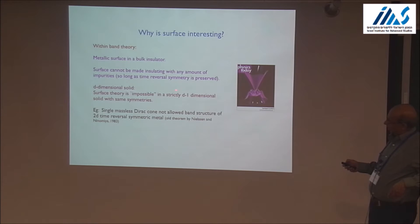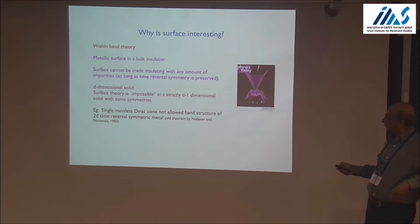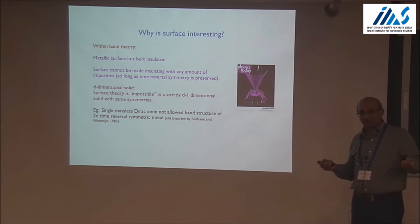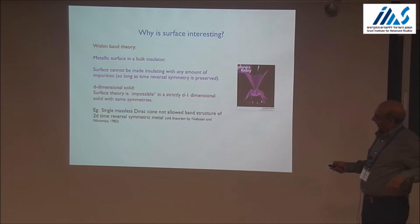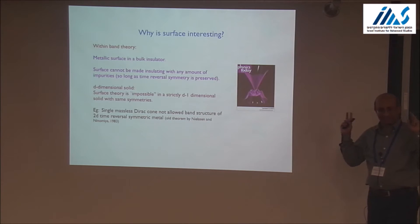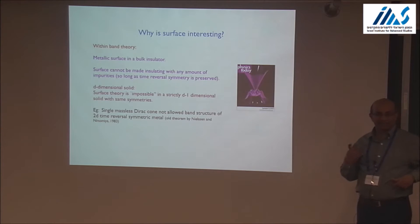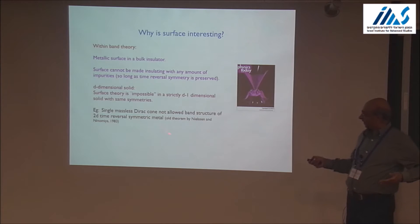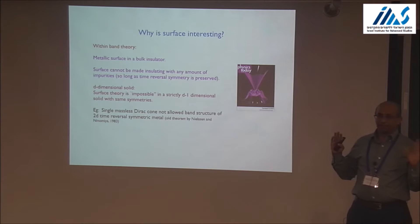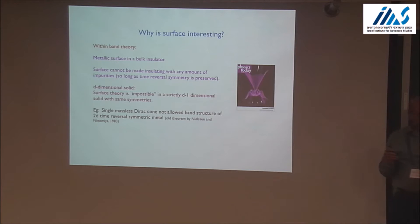More conceptually, if you have a d-dimensional solid in a topological insulating phase, the surface theory — where the surface is a (d-1)-dimensional system — is in a very precise sense impossible in a regular (d-1)-dimensional solid with the same symmetries. The more technical way to say 'impossible' is that it's anomalous, in the sense in which that word is used in the field theory literature. For instance, the single massless Dirac cone at the surface of the 3D topological insulator is not an allowed band structure of any 2D time reversal symmetric metal, but it is realized physically at the surface of the 3D topological insulator.